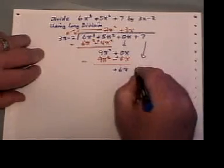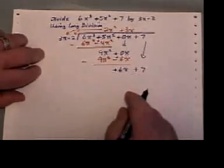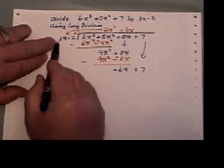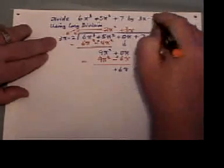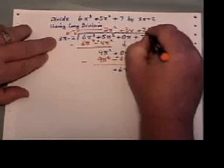And I bring down the next term, which is plus 7. And I repeat. What do I have to multiply 3x by to get to plus 6x? I just have to multiply it by 2.